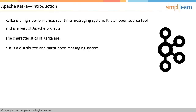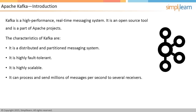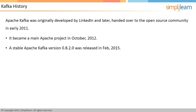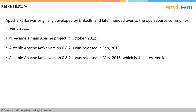It has been tested to process and send millions of messages per second to several receivers. Apache Kafka was originally developed by LinkedIn to handle their log files and later handed over to the open-source community in early 2011. It became a main Apache project in October 2012. A stable Apache Kafka version 0.8.2.0 was released in February 2015 and version 0.8.2.1 was released in May 2015, which is the latest version.